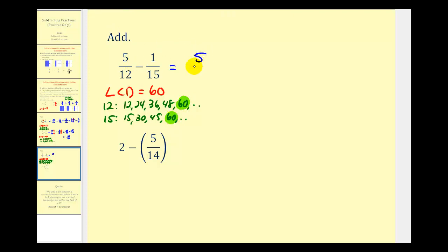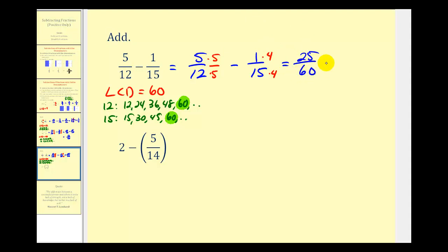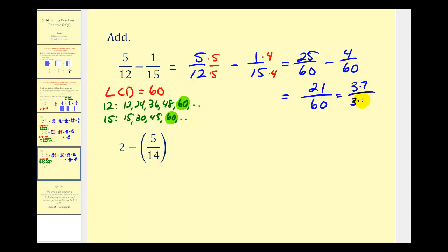We'll write equivalent fractions with a denominator of sixty. Since twelve times five is equal to sixty, we multiply both top and bottom by five. Since fifteen times four is equal to sixty, we multiply top and bottom by four. So we have twenty-five-sixtieths minus four-sixtieths. The denominator stays the same, and twenty-five minus four equals twenty-one. Twenty-one and sixty share a common factor of three: twenty-one is three times seven, and sixty is three times twenty. So our simplified difference is seven-twentieths.